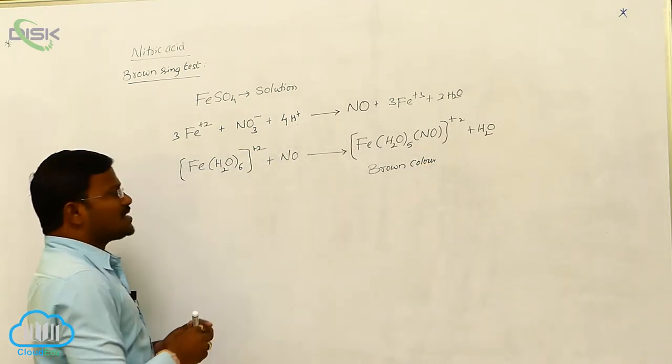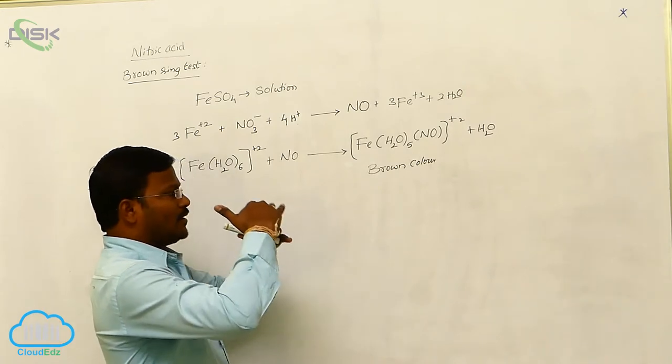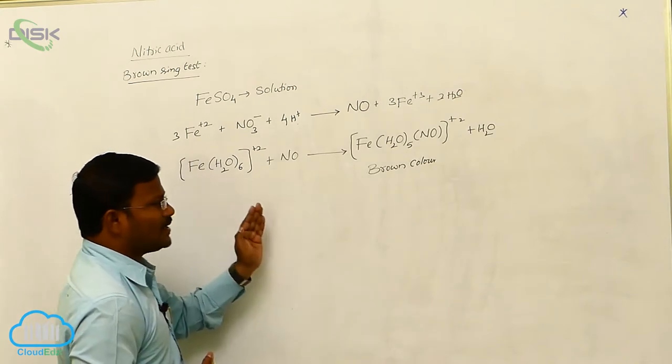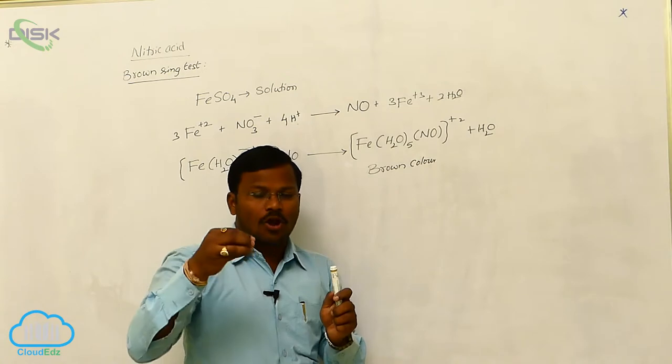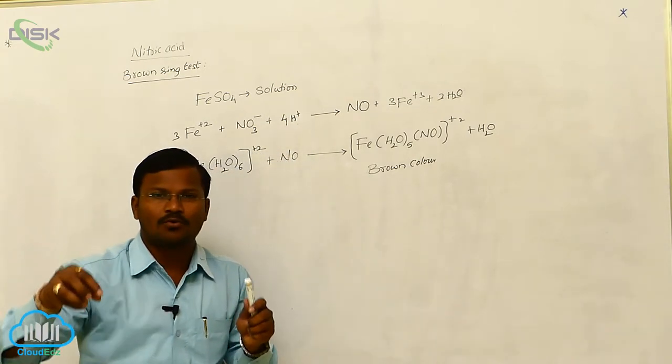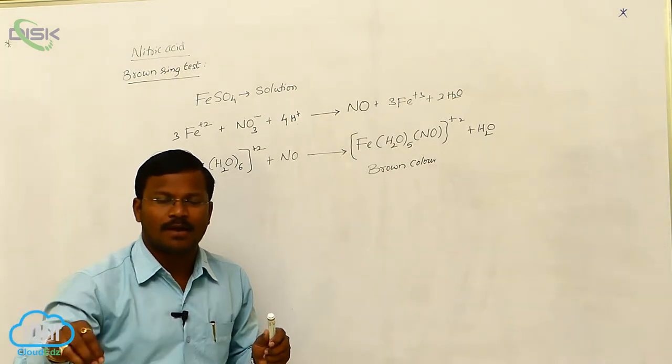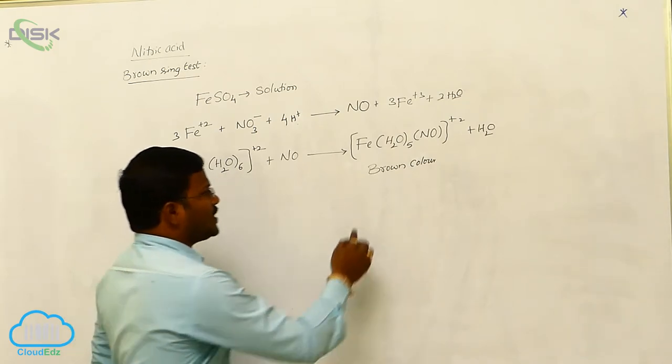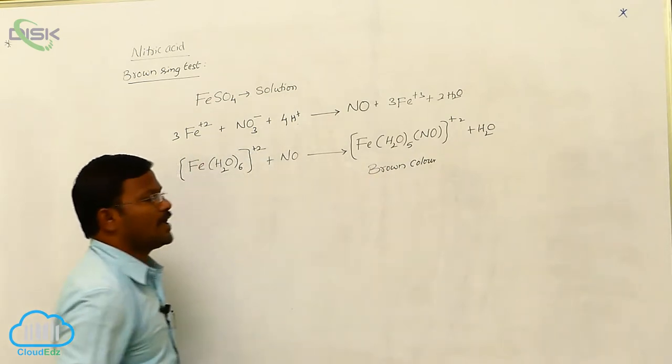Now this complex is formed in between interphase of two layers during the reaction. Ferrous sulfate aqueous solution, we are going to add in a dropwise manner from the sides of the walls of test tube. We have to add concentrated sulfuric acid carefully in dropwise manner. At the interface of two phases, there is a formation of this brown color substance. This is called brown ring test.